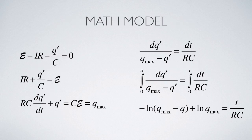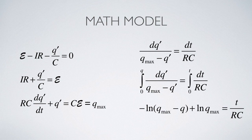To build a mathematical model, we start with the loop rule, which is always true since it expresses conservation of energy. It must hold at all times, not just at the beginning or the end. Applying the loop rule to our circuit, the positive voltage is the EMF of the battery, and we subtract IR across the resistor and Q over C across the capacitor. Rearranging and substituting the current as dQ/dt gives us our key equation.